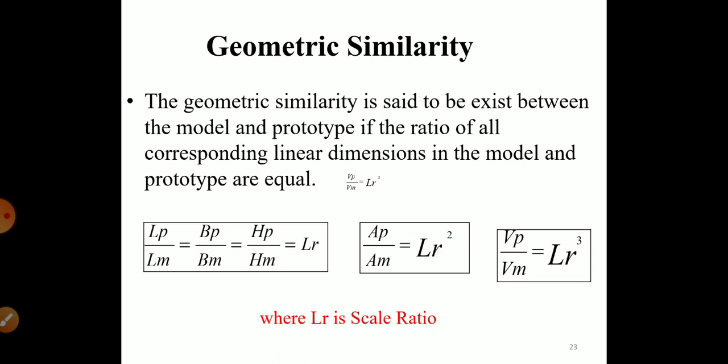Geometric similarity exists if the ratio of corresponding linear dimensions in the model and prototype are equal. The scale ratio is: Lr = Lp/Lm = Bp/Bm = Hp/Hm, where Lp, Bp, Hp are length, breadth, and height of the prototype and Lm, Bm, Hm are the corresponding model dimensions. Area ratio equals Lr squared (Ap/Am = Lr²), and volume ratio equals Lr cubed (Vp/Vm = Lr³). This is called geometric similarity.